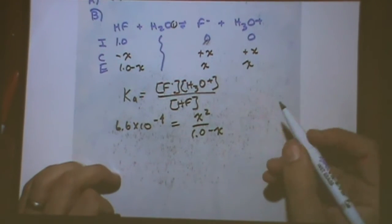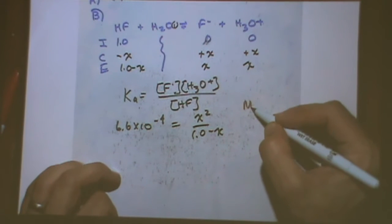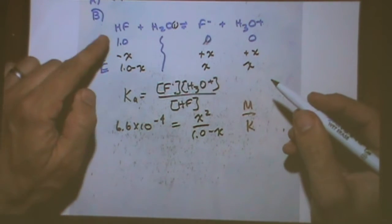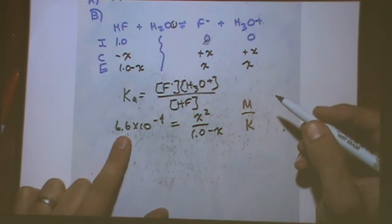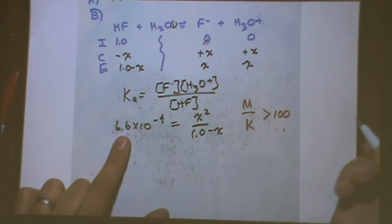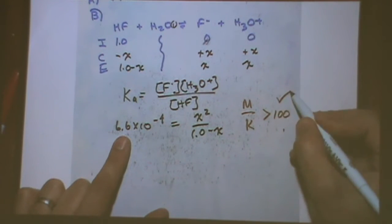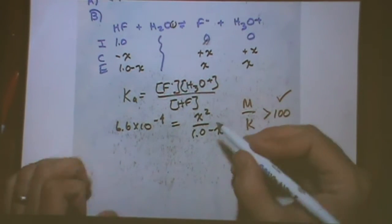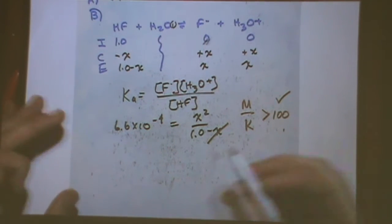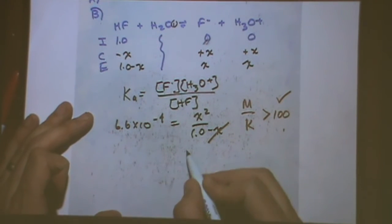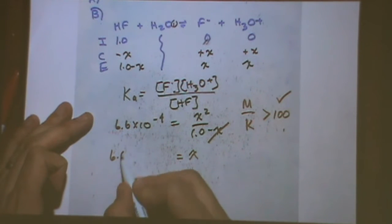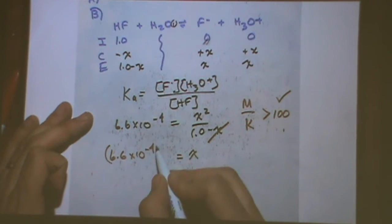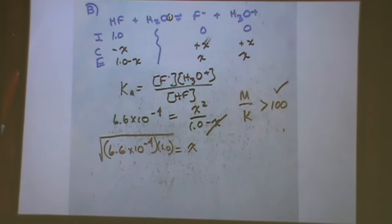Okay, so I'm going to make an assumption. First, let's double check if I can make an assumption. You want to check M over K for 1 over 6.6 times 10 to the minus 4. And ask myself, is that greater than 100? Yes or no? Yes. Yeah, that's definitely greater than 100. My assumption will work. I'm going to cross out this x here.